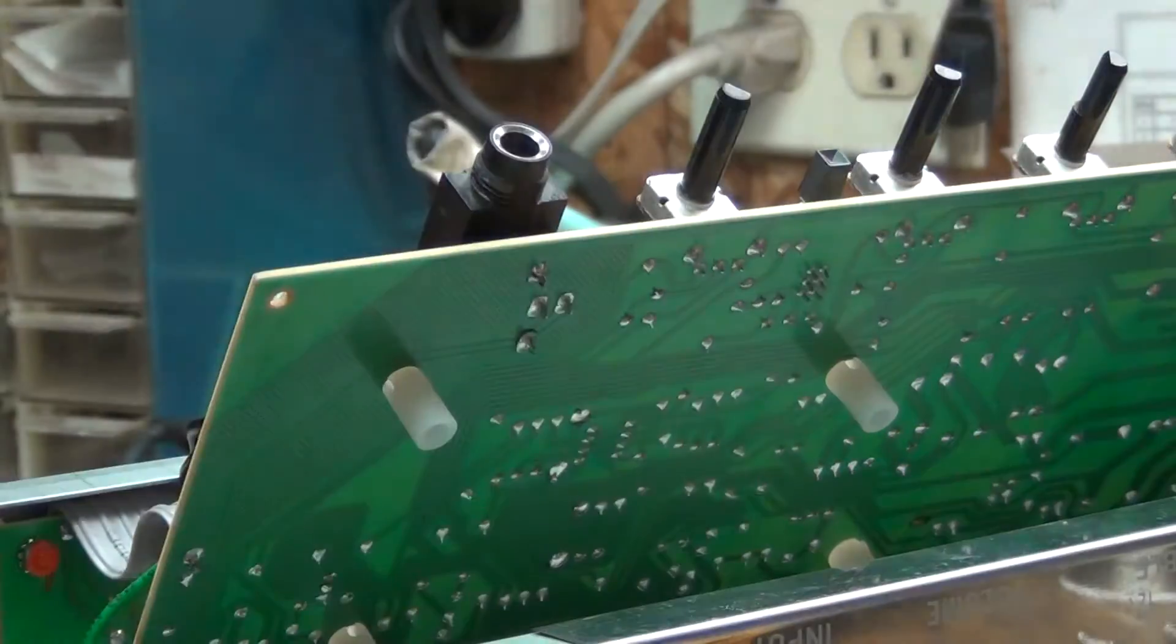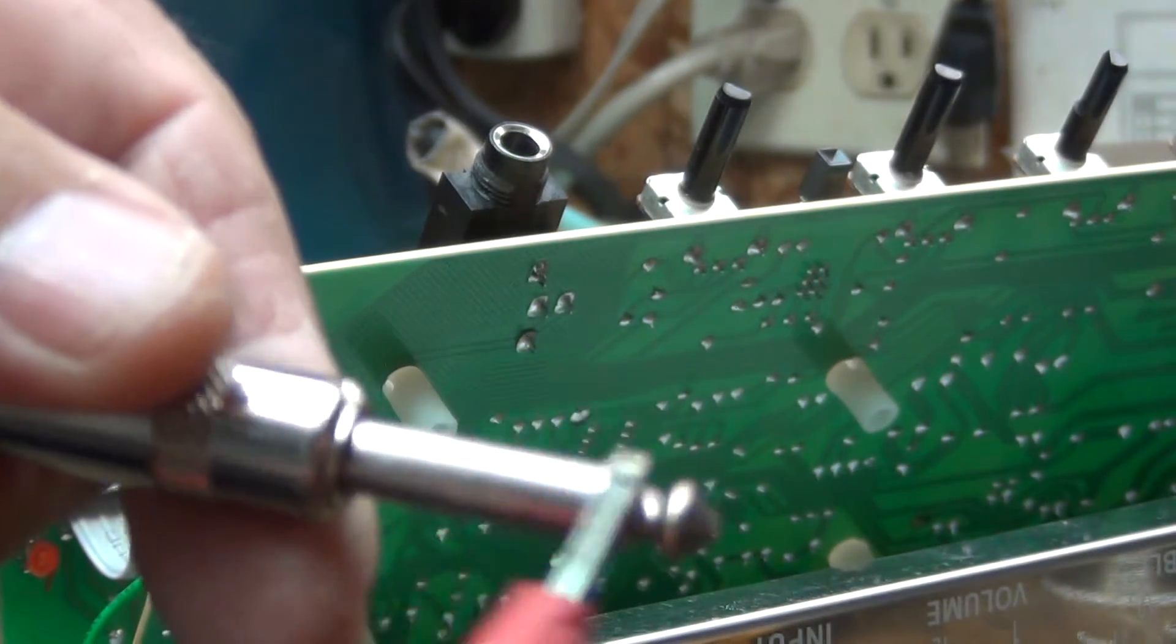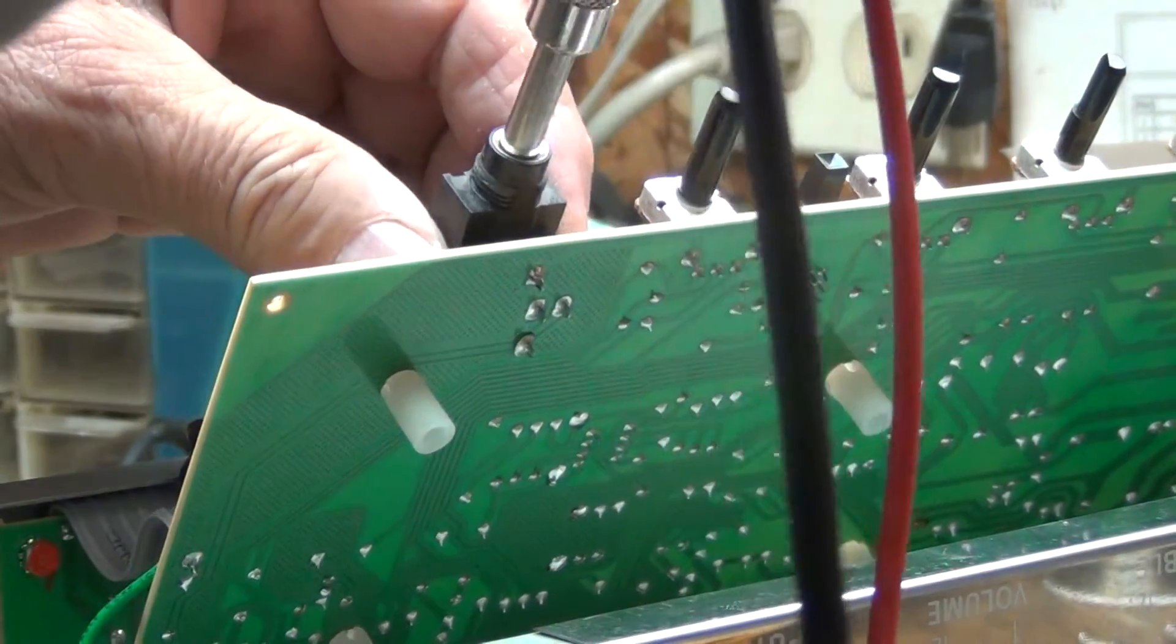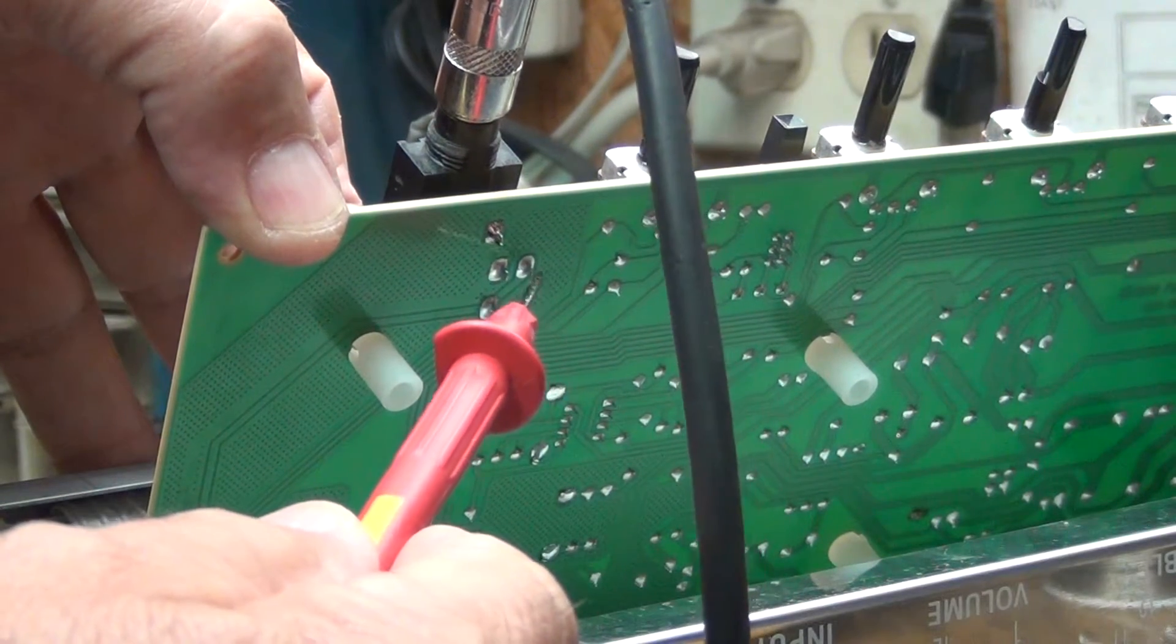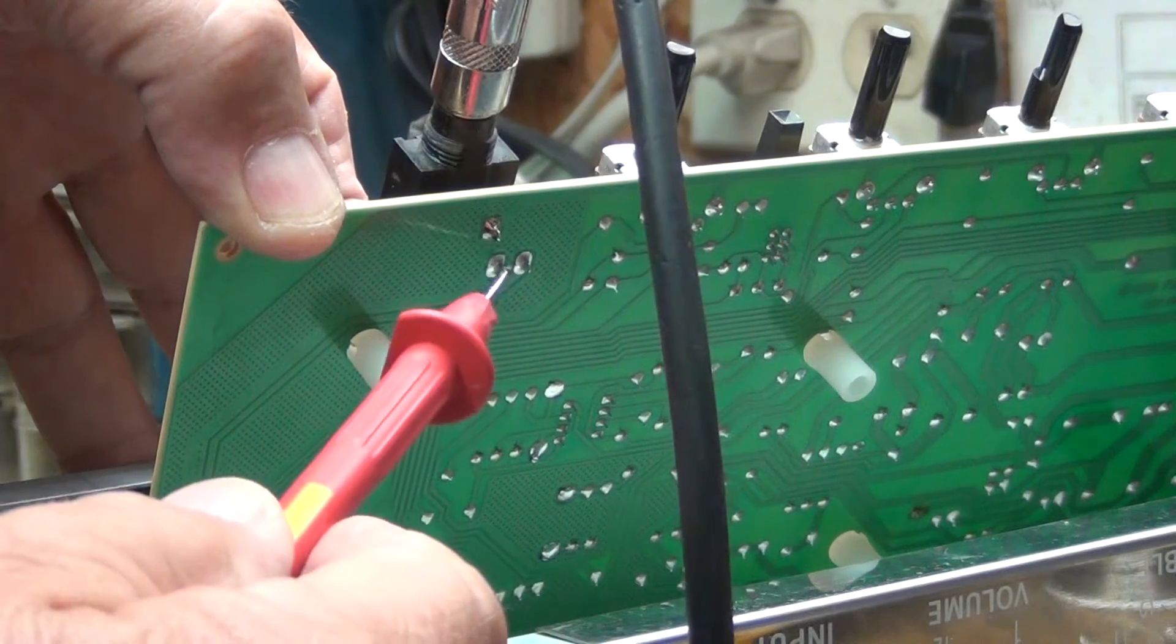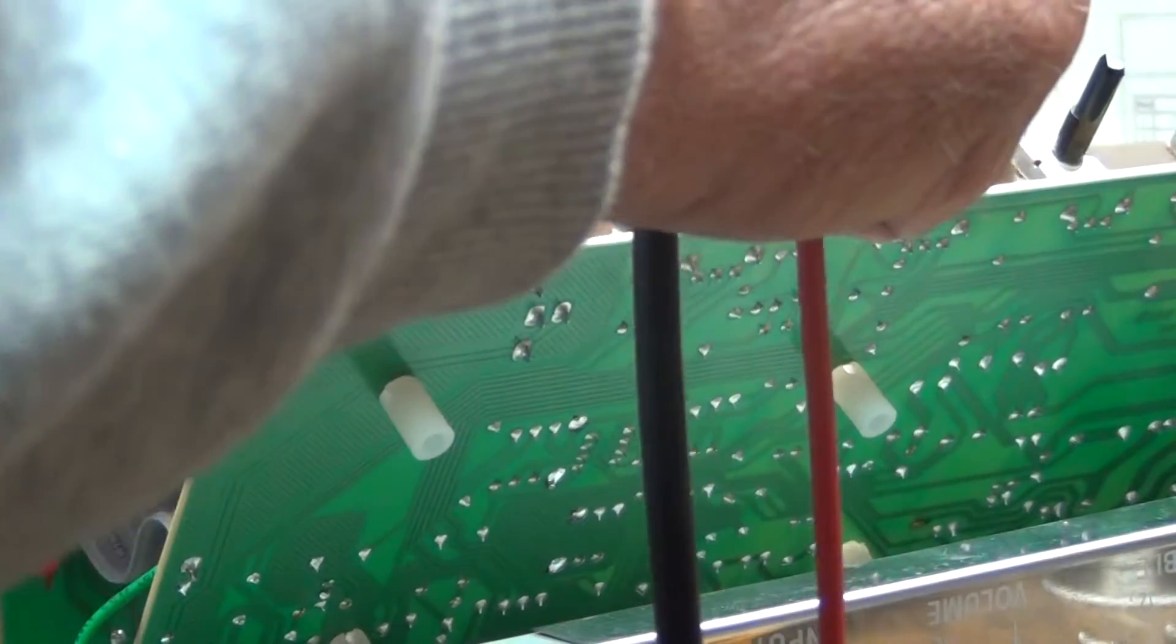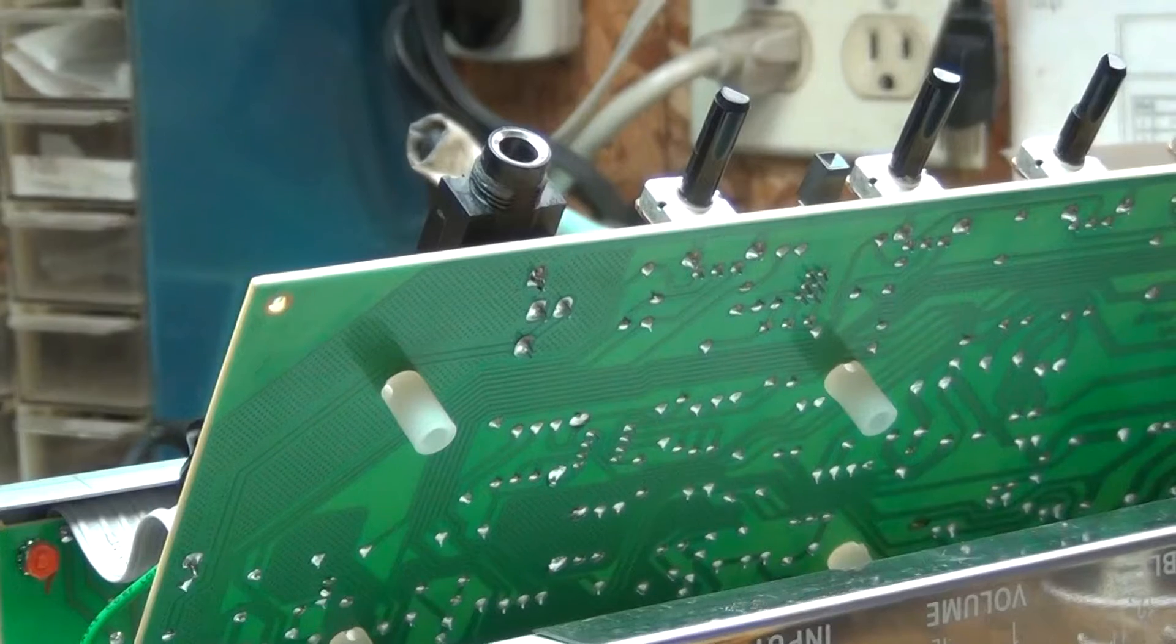Now I'm going to change the other side of my continuity to the tip, not the shank, the tip, plug it back in and it should be the other two, which it is. So these two are hot, these two are ground. So now we know how to hook up our Switchcraft jack when we put it in.